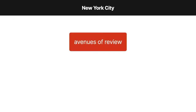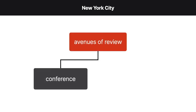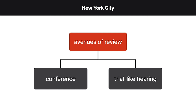New York City provided additional avenues of review. In addition to the conference provided for by state law, New York City foster parents could request a trial-like hearing before a foster child was transferred to a new foster home.